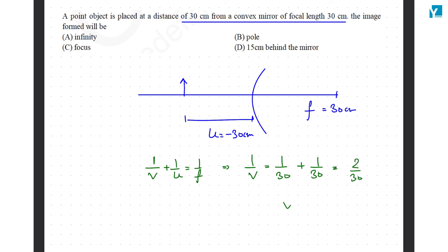This gives you 1 by V equal to 2 by 30, so V is equal to plus 15 cm. This is going to be the answer behind the mirror.